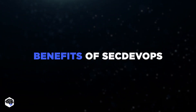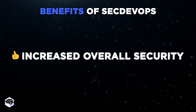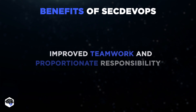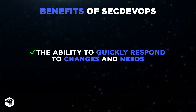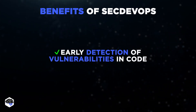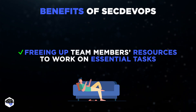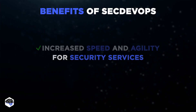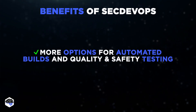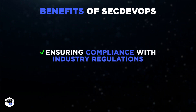The most important and obvious benefit of the DevSecOps approach is the increased overall security. However, there are other notable benefits, such as improved teamwork and proportionate responsibility, the ability to quickly respond to changes and needs, early detection of vulnerabilities in code, freeing up team members' resources to work on essential tasks and projects, increased speed and agility for security services, more options for automated builds and quality and safety testing, and ensuring compliance with industry regulations.